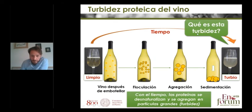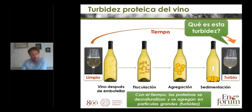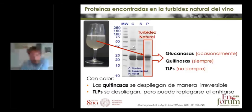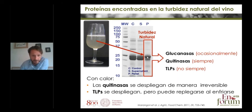Part of my investigation and that of many other groups is to understand why this is happening, and we can start by looking at what's inside. If you separate the turbid part from the liquid one — as we did in this experiment — we can see that the wine before treatment, with all the soluble proteins, has all the bands seen in the control. But if you centrifuge the wine and separate the liquid from the pellet, the insoluble fraction shows mainly two bands: a little glucanase, a lot of chitinase, and some thaumatin-like proteins. Glucanases are occasionally found in turbidities; chitinases are always found; thaumatin-like proteins, sometimes yes, sometimes no.